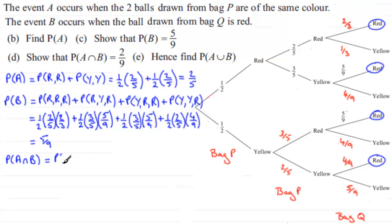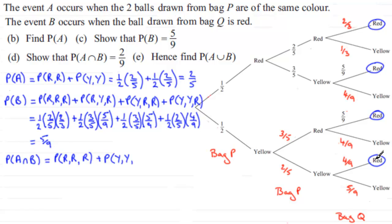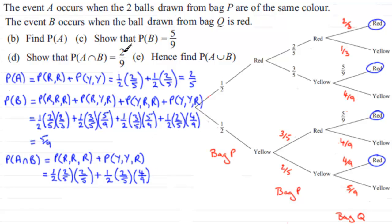So for both events to happen we need two balls from bag P of the same color — either red-red or yellow-yellow — followed by a red from bag Q. Inserting the probabilities for those two paths and working it out gives a total of two ninths.